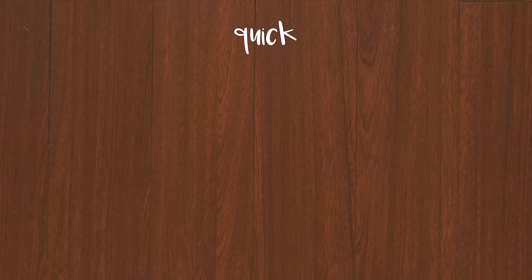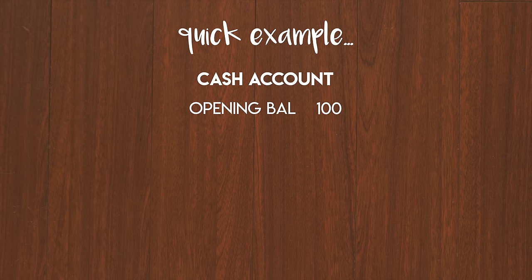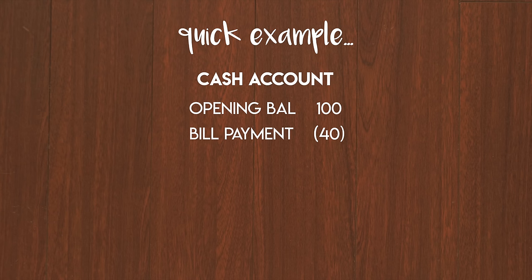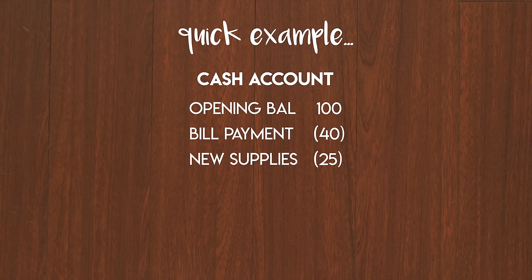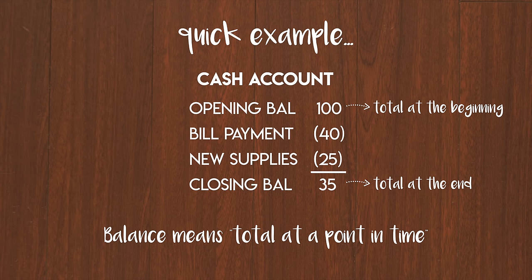Now we will run through a quick example to illustrate this. Let's say your business has a cash account with a hundred dollars in it — that's your opening balance. You take out $40 to pay a bill and then you decide to take out $25 more to buy some new supplies. So you are left with $35 in the account, which we will call your closing balance. Balance is another way of saying total at a point in time. Your opening balance means your total cash at the beginning and your closing balance means your total cash at the end.